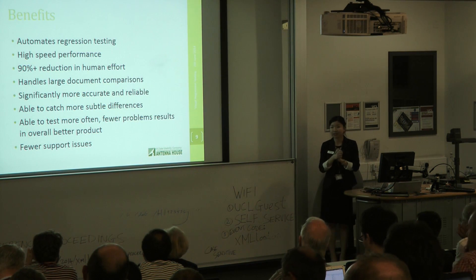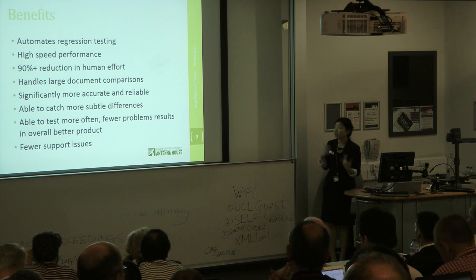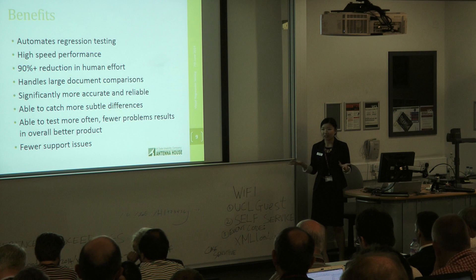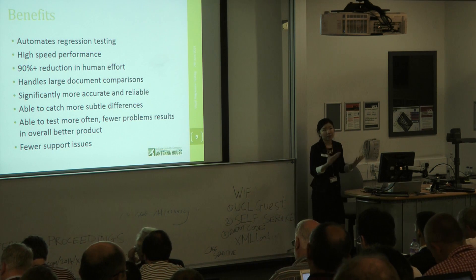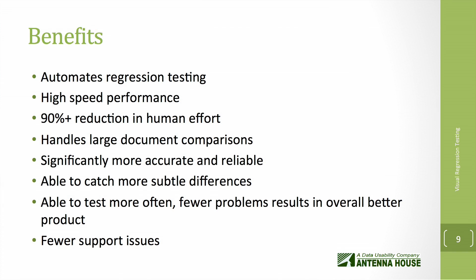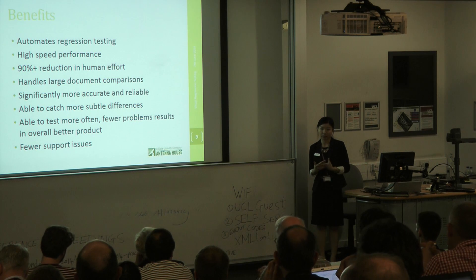Now, the benefits we have seen — significant improvements since using this tool for internal regression testing. Because it's automated, you don't need that many people to do the regression testing; it just takes a couple clicks of a button, and then you just need a couple people to actually review the reports. Our test suite of 10,000 pages that used to take three days now takes less than two hours, which is pretty impressive. It handles large document comparisons with no page limit. That means we can do more regression testing, and we're very confident that it finds every single minute change or difference between those PDFs from different versions of the software. We were able to catch more bugs, have fewer issues, and provide an overall better product to our customers in a timely fashion.